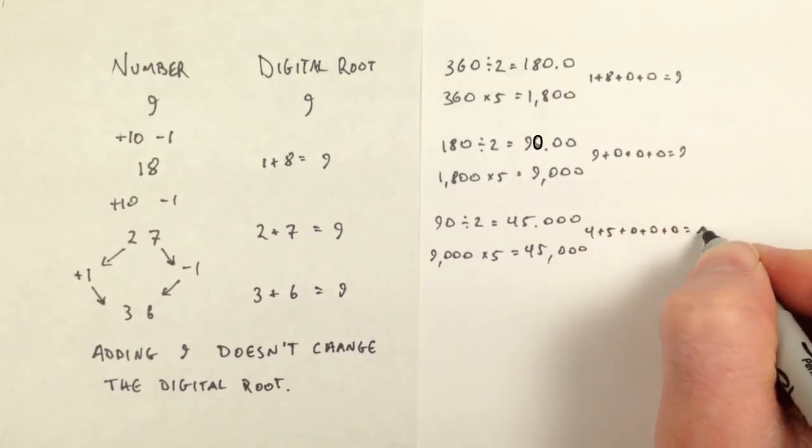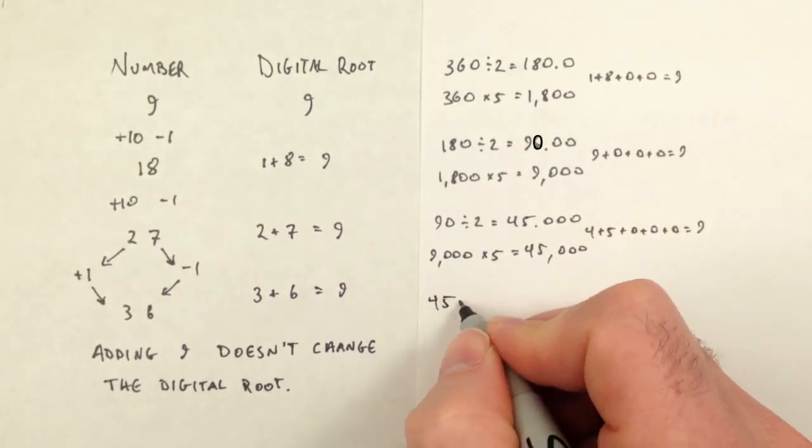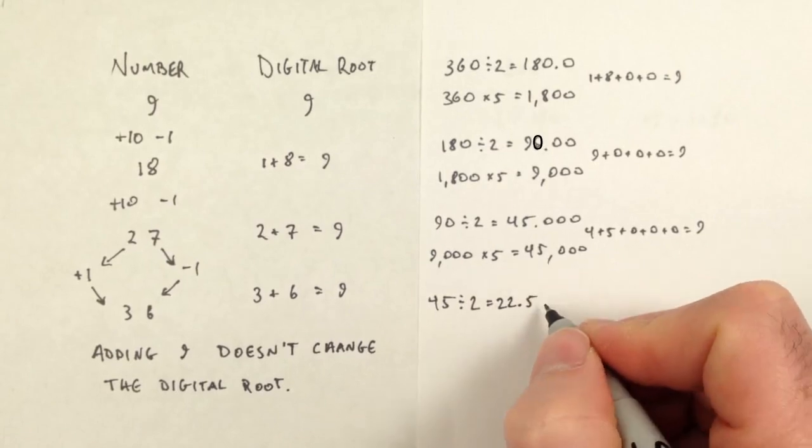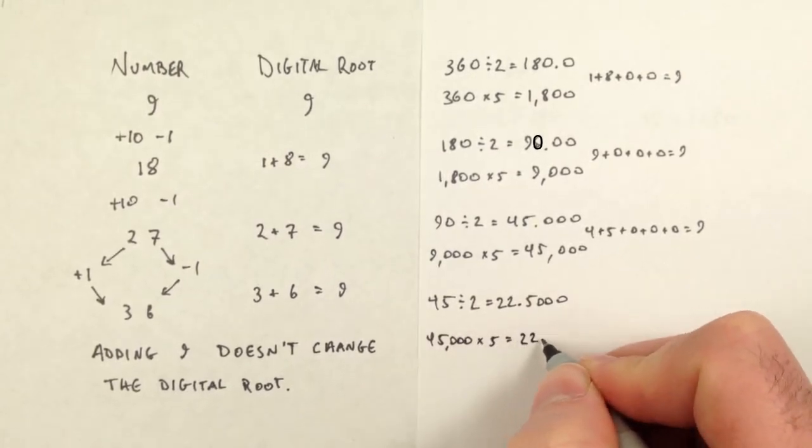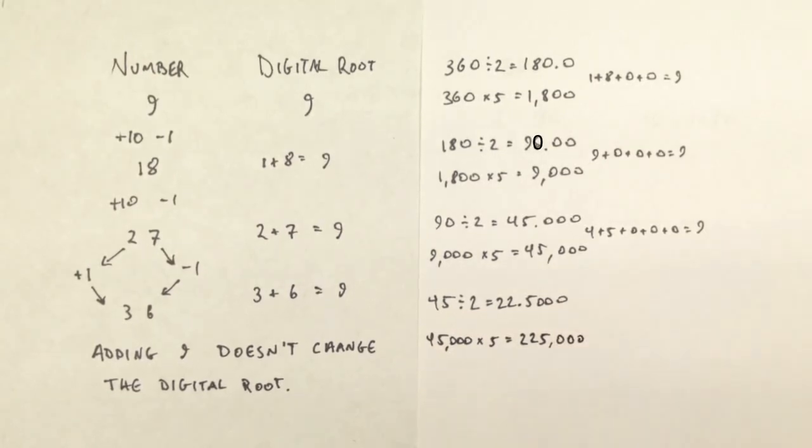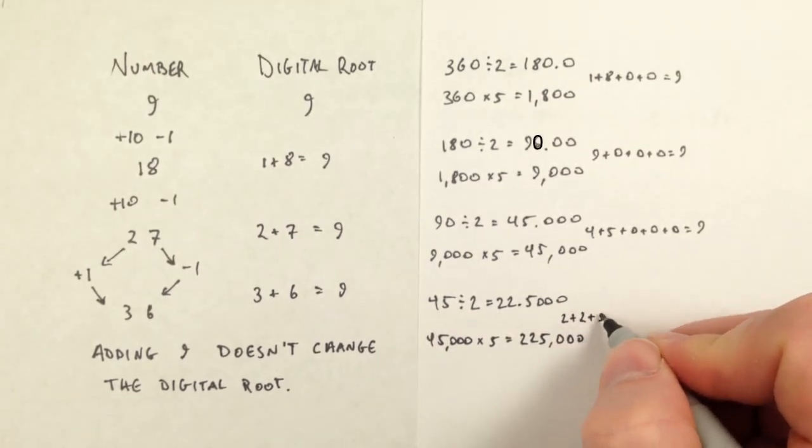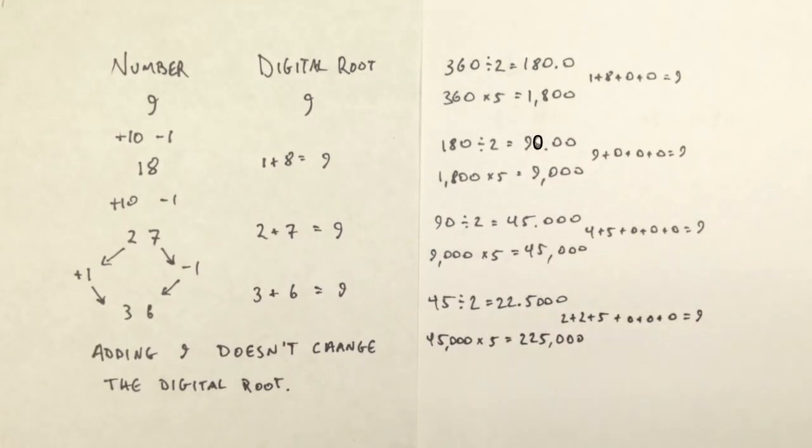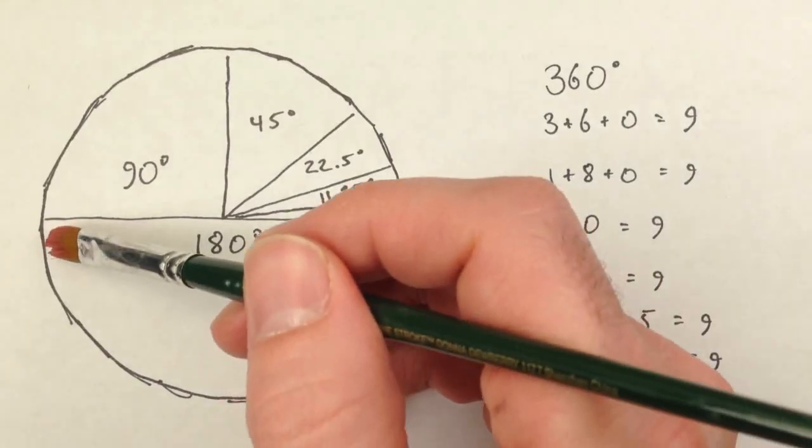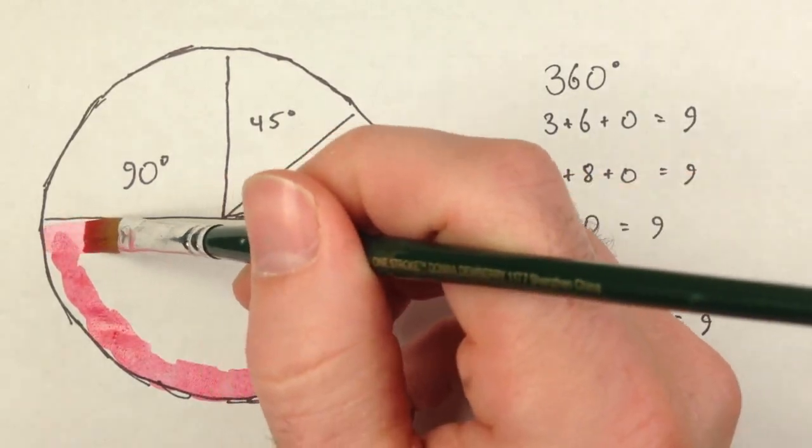No matter how many times you do this to 360, the factor of 9 never disappears. So every result will have the digits of a multiple of 9 and therefore a digital root of 9. So we start with a digital root of 9 and do nothing to change it. Why would it be a surprise or a mystery that the digital root is 9 the whole time?